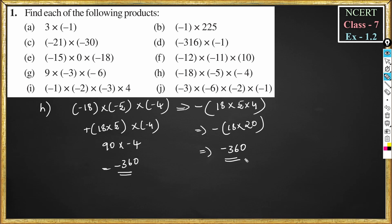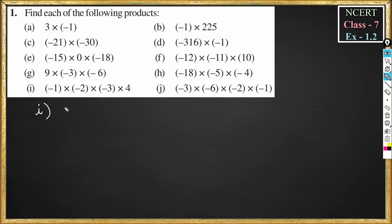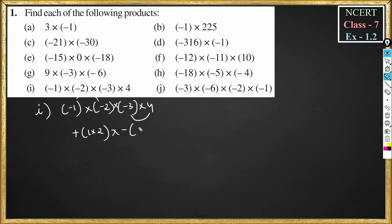Part i: minus 1 into minus 1 into minus 2 into minus 3 into 4. First multiply the first two numbers, then the next two, and then multiply both products. Minus into minus gives plus 1, and minus 3 into 4 is minus 12. Then plus into minus is minus, and 2 into 12 is 24. The answer is minus 24.